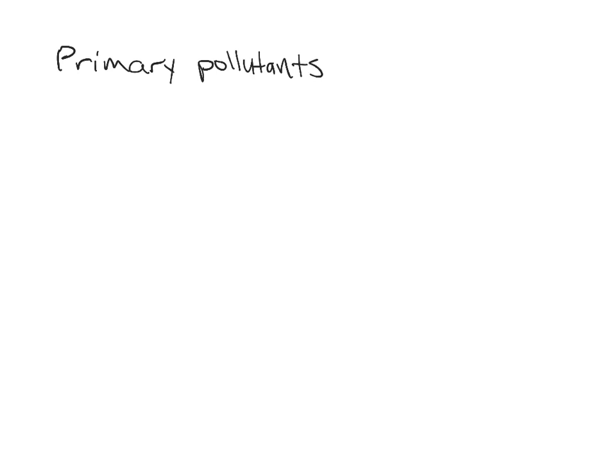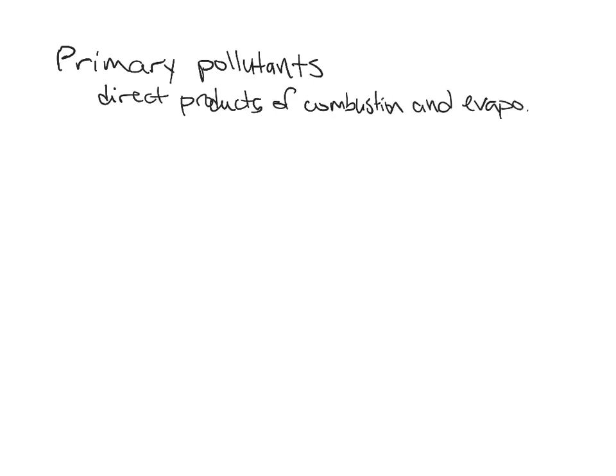Air pollutants are broken down into two main categories: primary pollutants and secondary pollutants. Primary pollutants are the direct products of combustion and evaporation — you burn something and you immediately get these, or something evaporates and you immediately get these. If those primary pollutants then undergo an additional reaction, they become secondary pollutants.